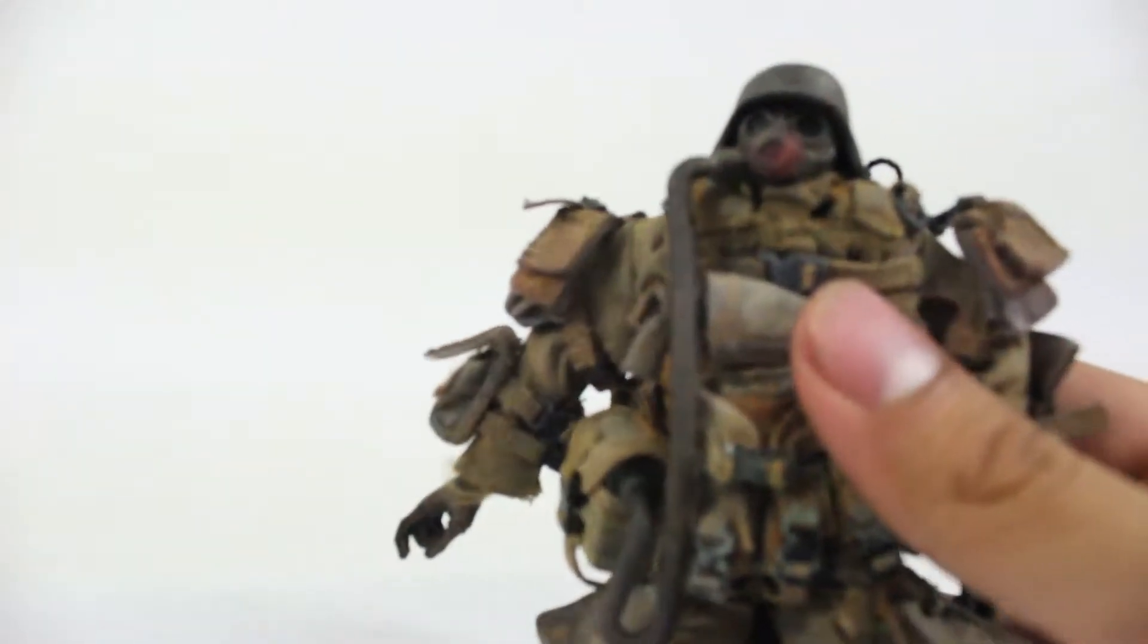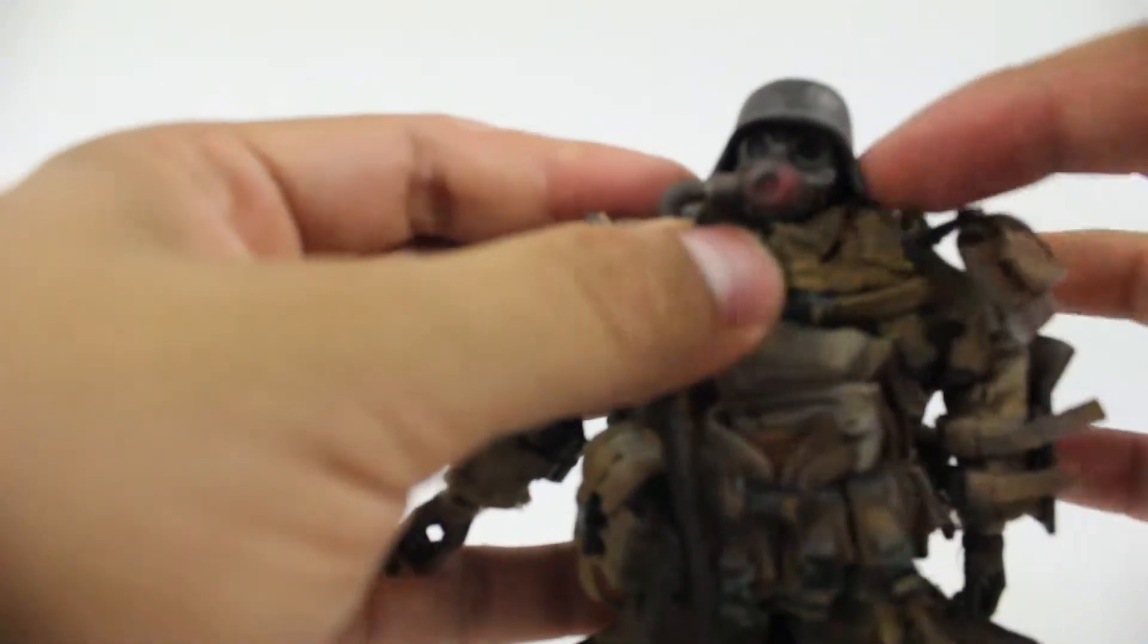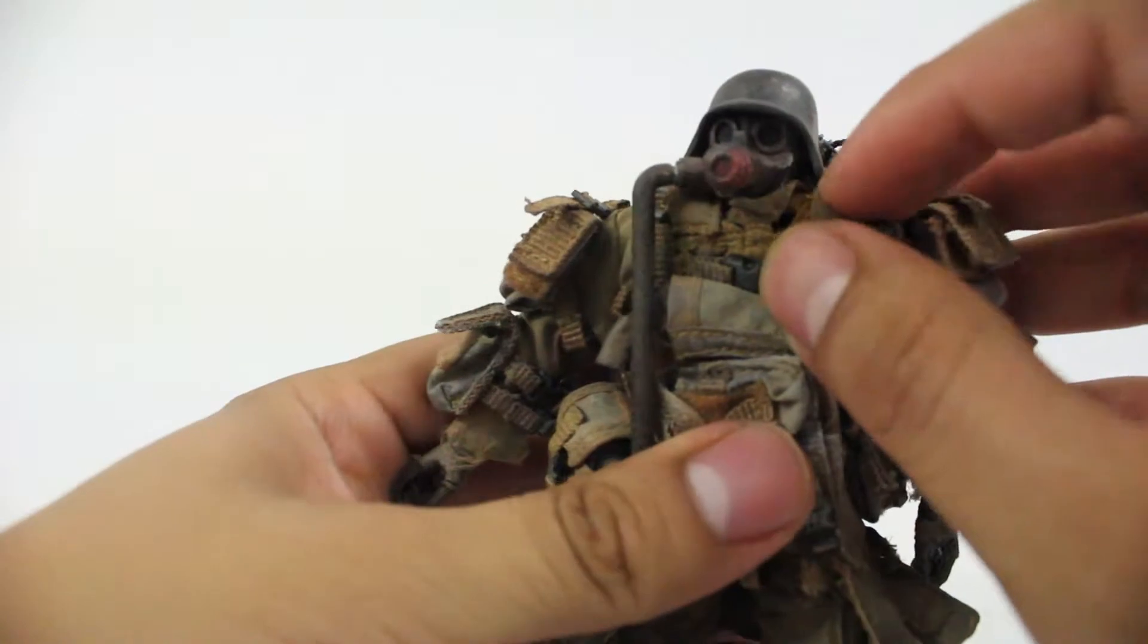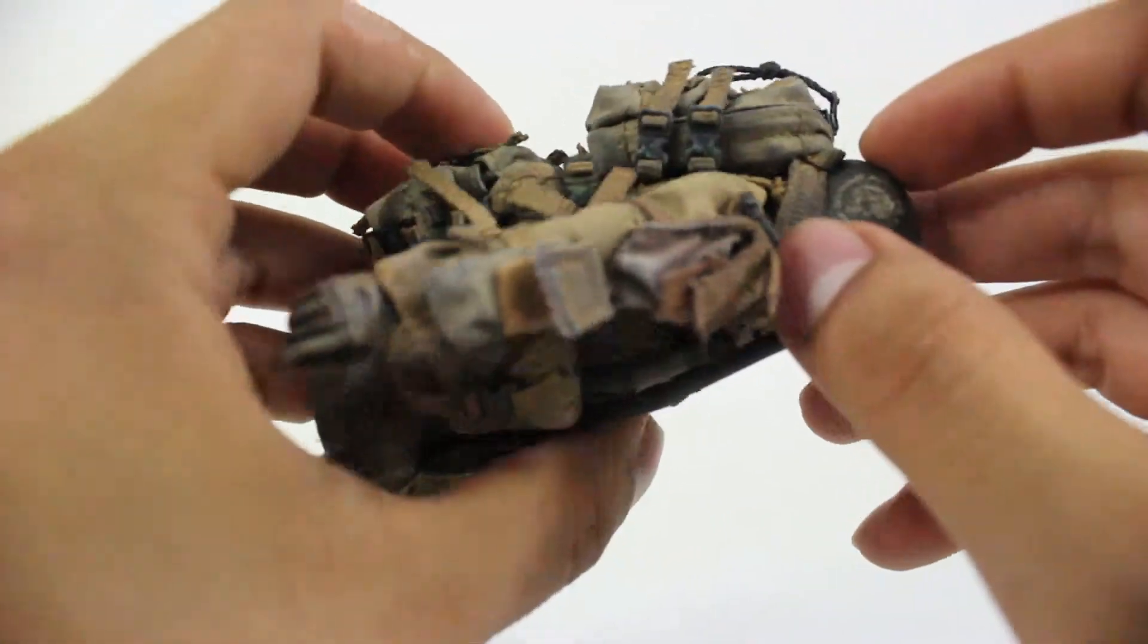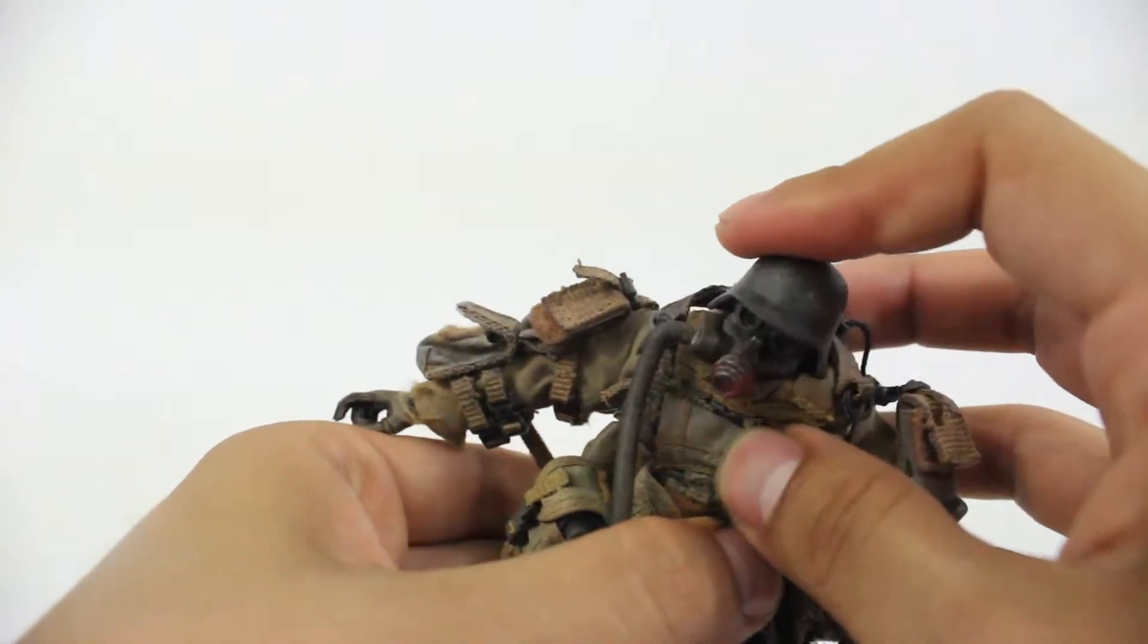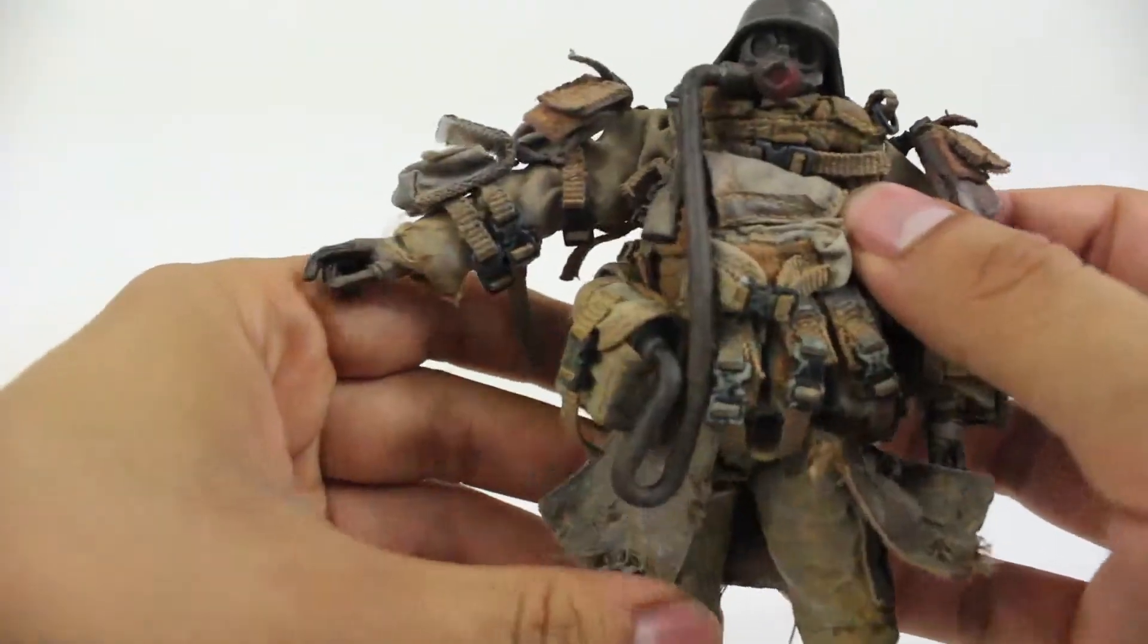His jacket is really puffy, he's got a lot of things on him, so his head movement is pretty limited. But he is kind of made to just sit there and look like a total badass, stand up and just look kind of daunting.